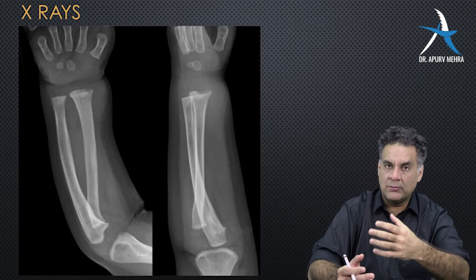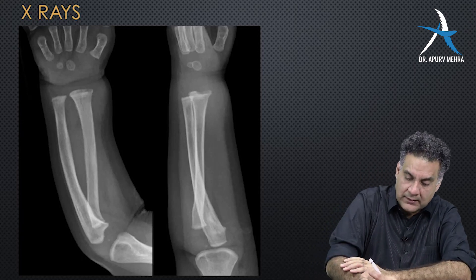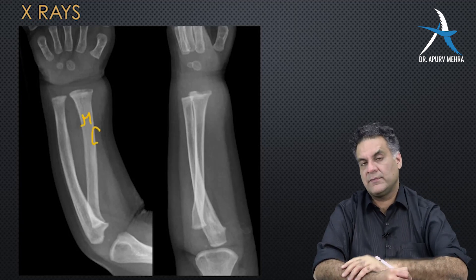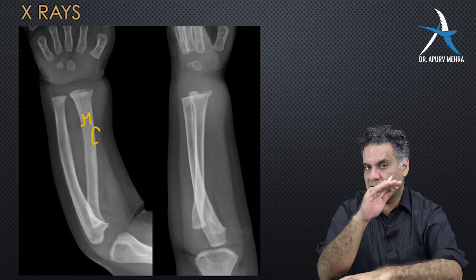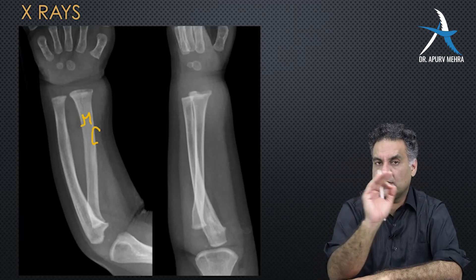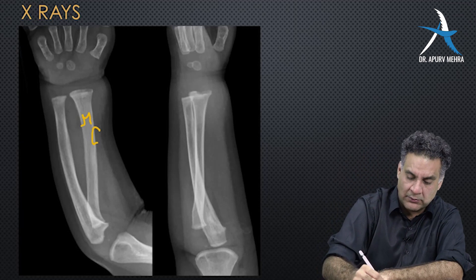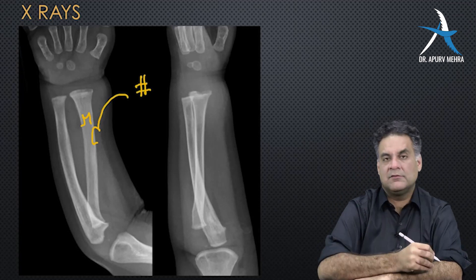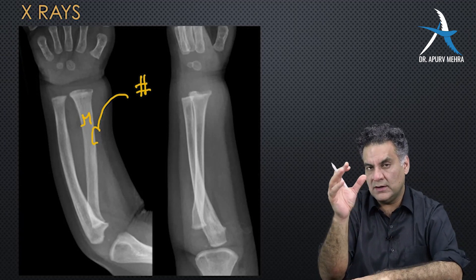A bone has marrow in the center and on the periphery a cortex. The cortex is a thicker, stronger bone. A break in the cortex is called a fracture — fracture is not just a break in the bone, fracture is specifically a break in the cortex of the bone.